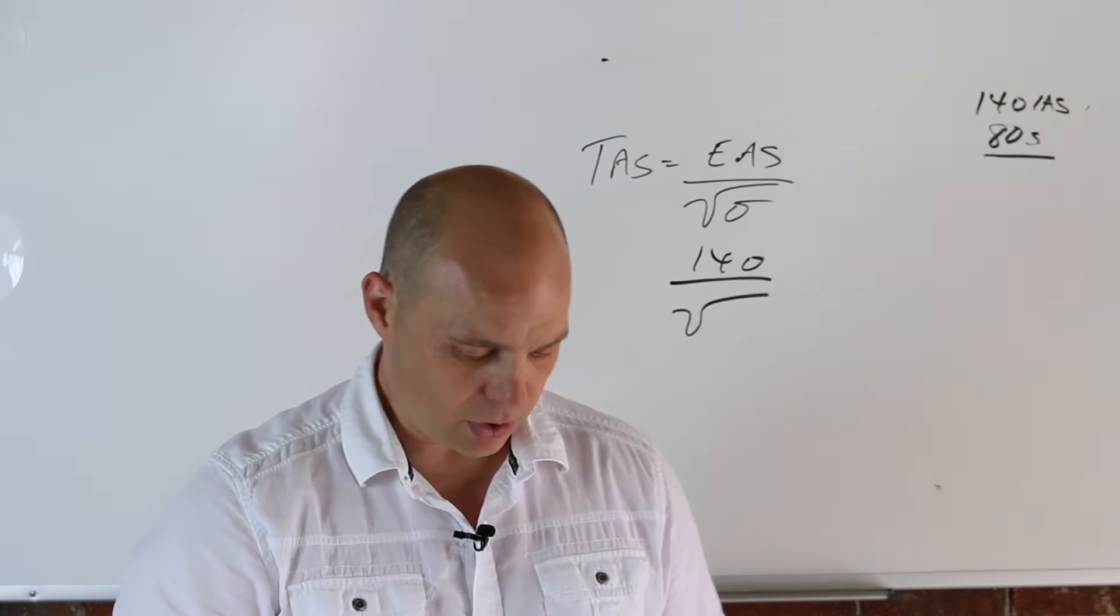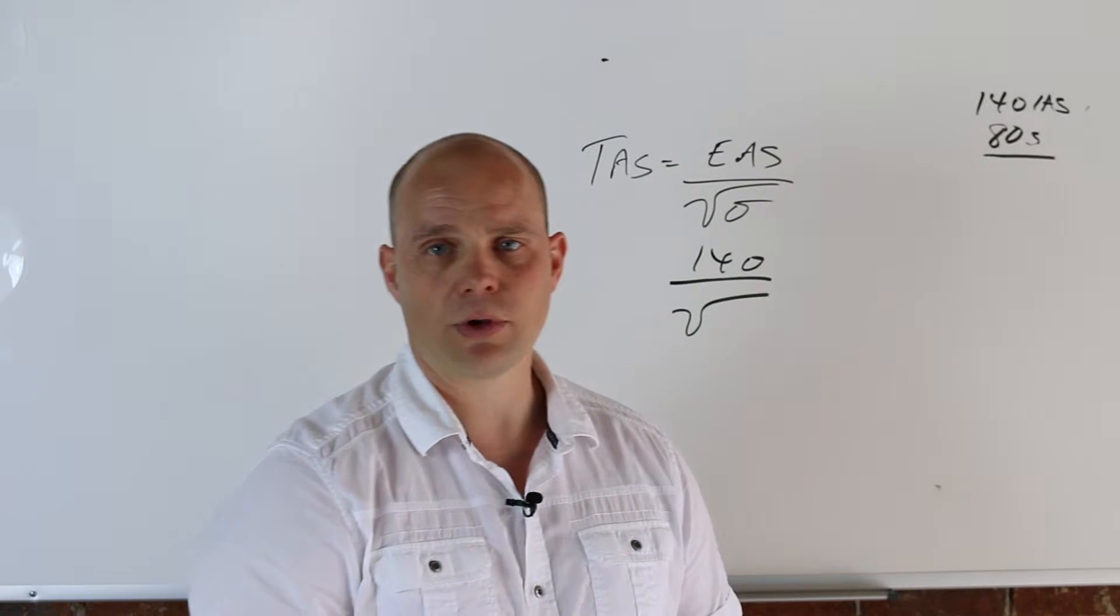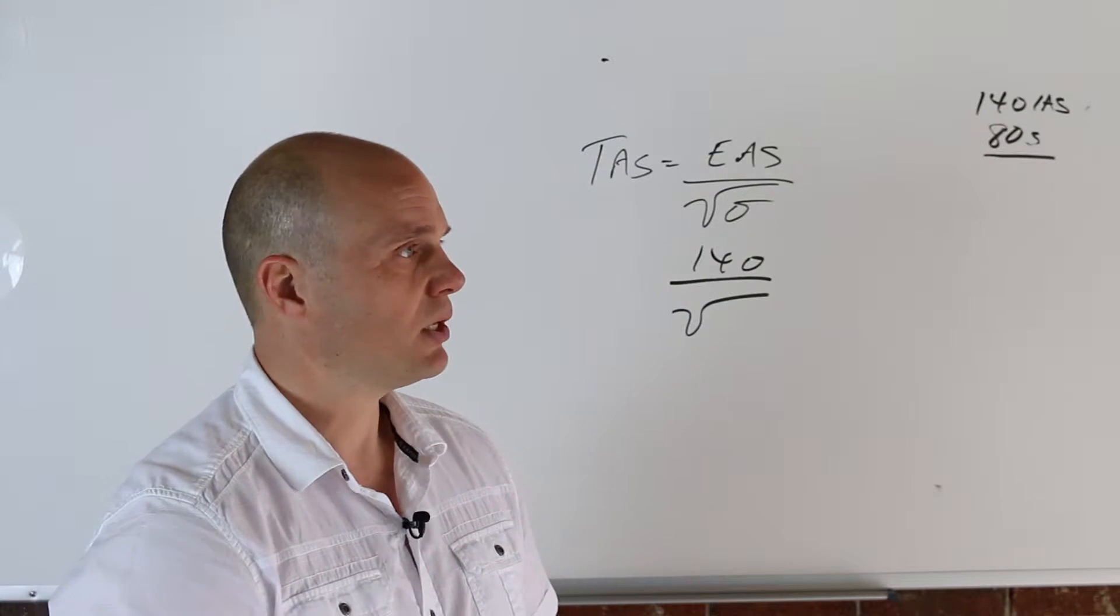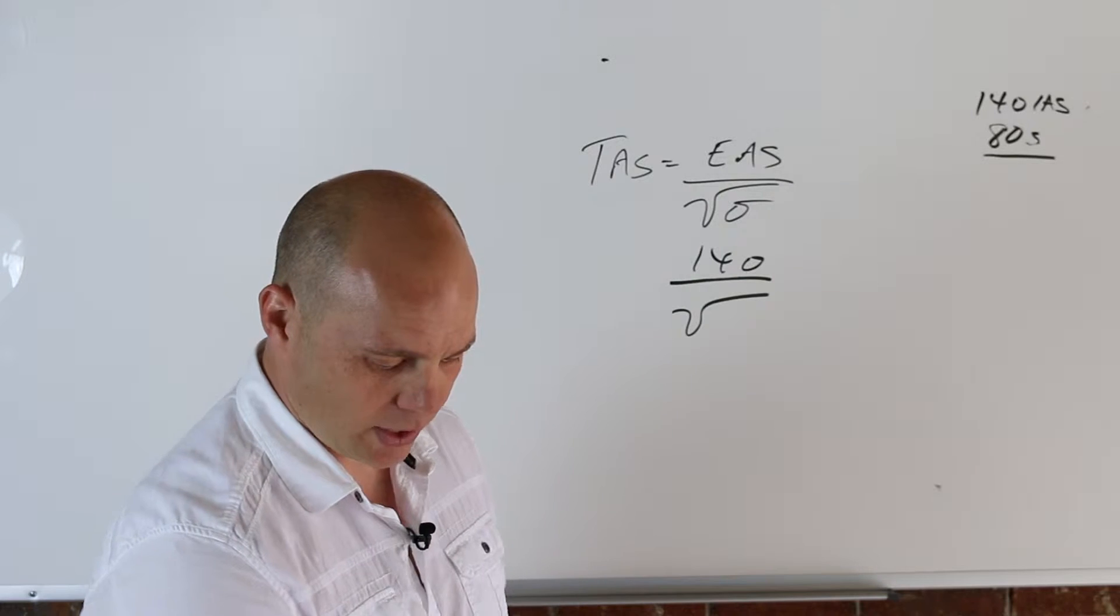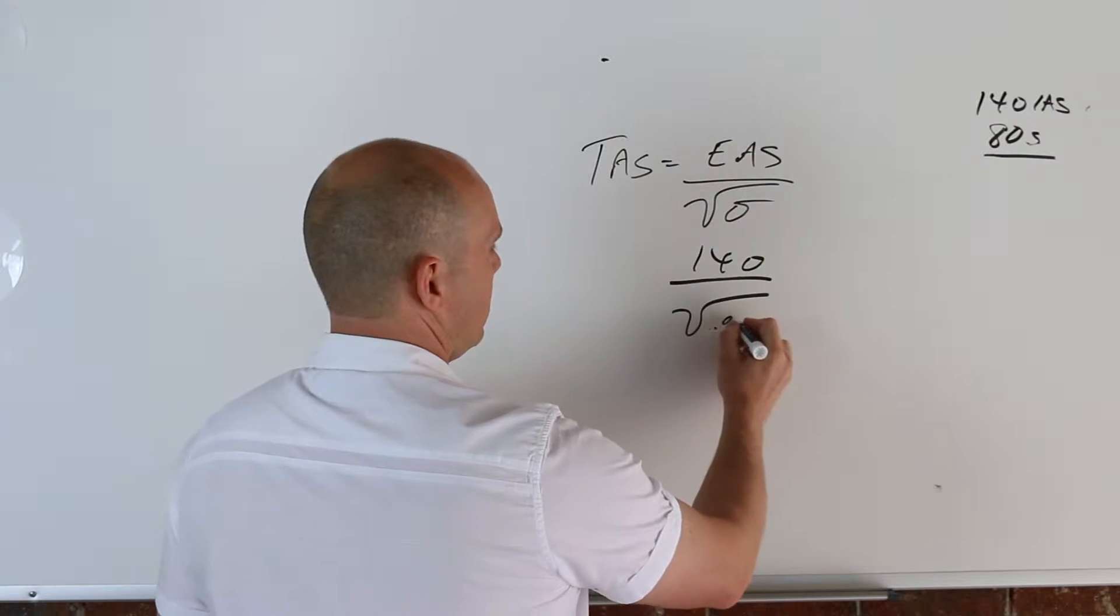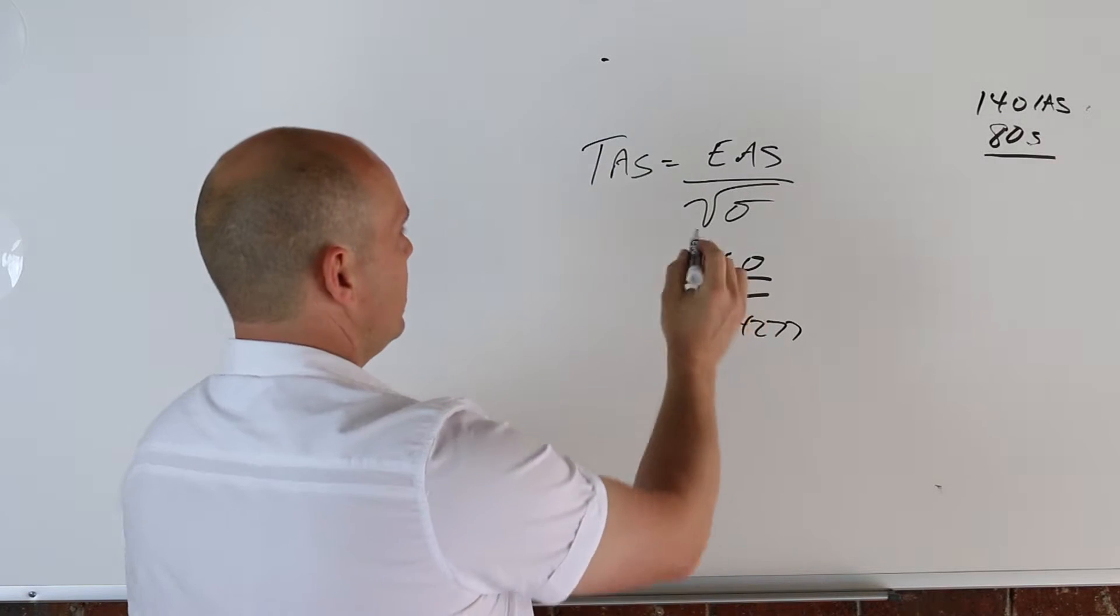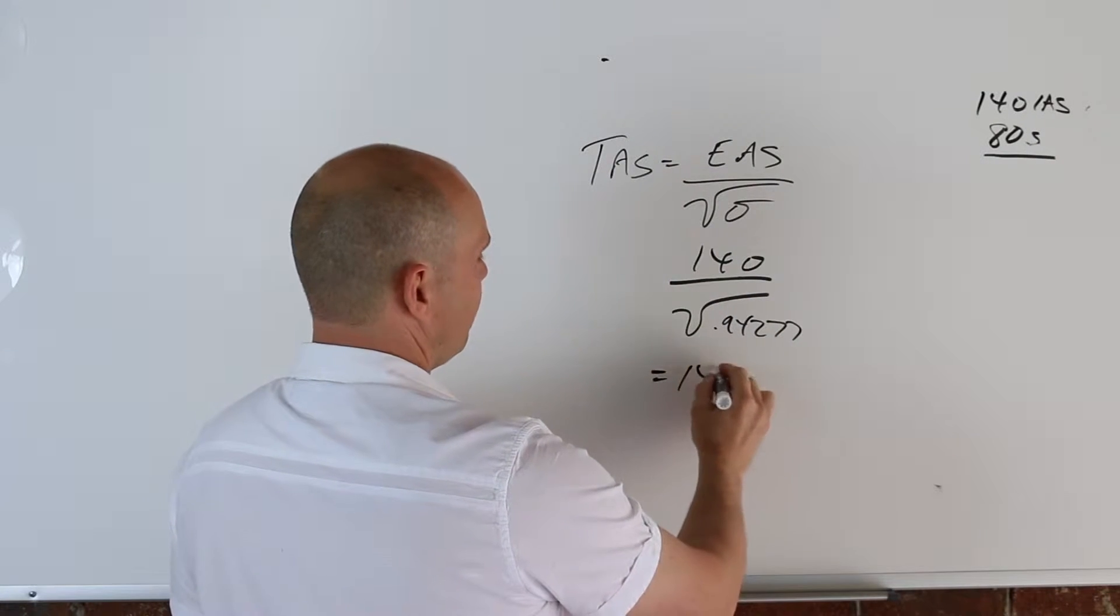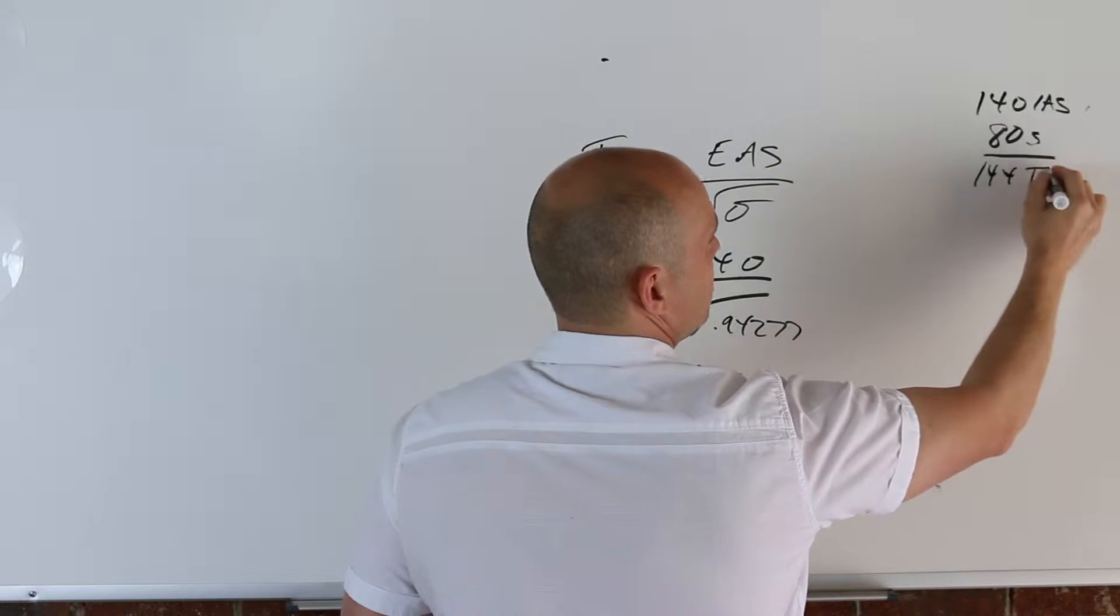So Chapter 2, it's on page 2.12 or Figure 2.1. That's that chart with all the different calculations that's been done for you. So your density ratio right there ends up being 0.94277. The square root of that divided into 140, that's going to give you an airspeed of 144 TAS.